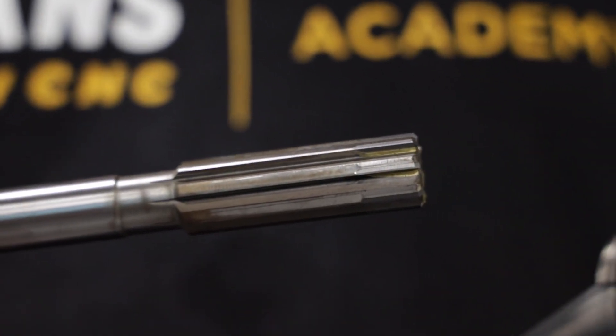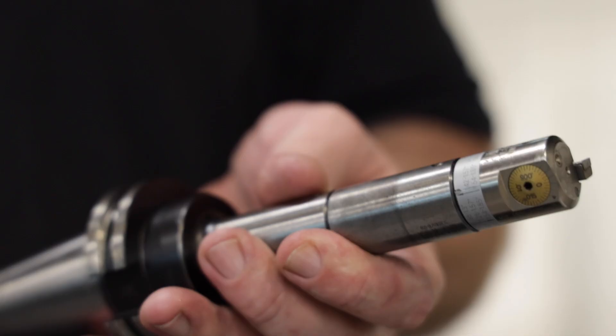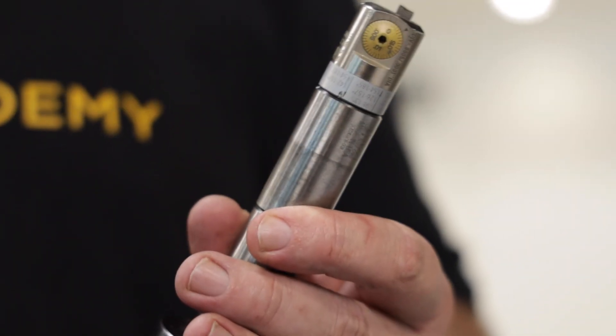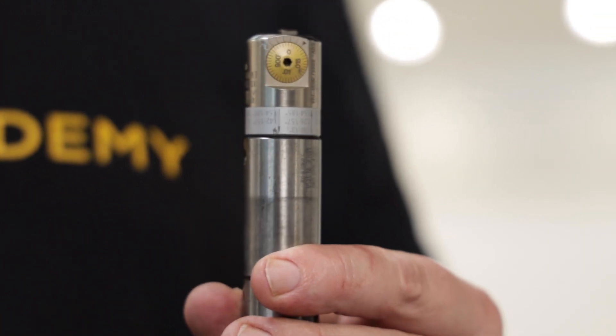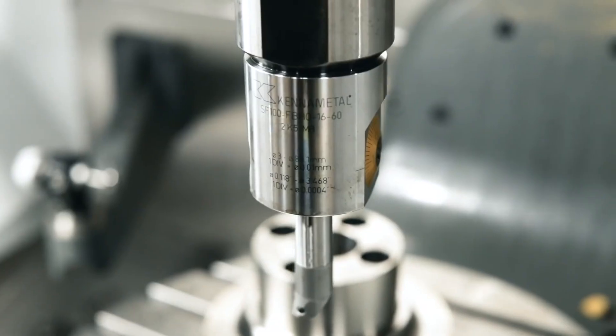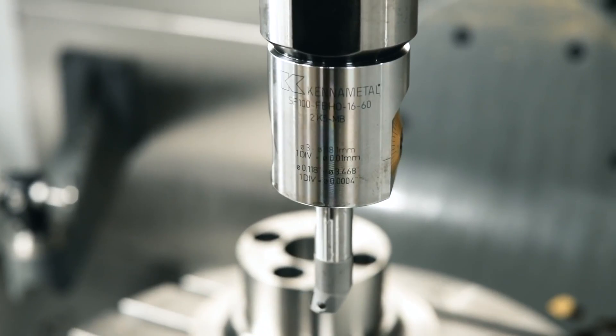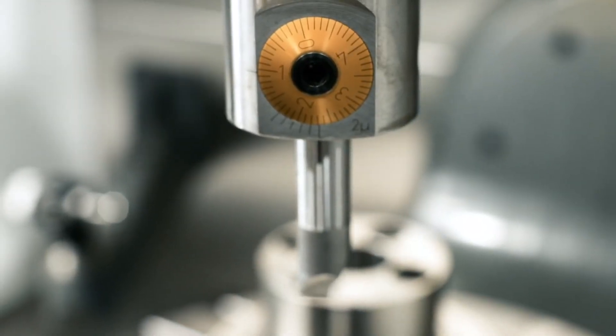Both reamers and boring heads can give you excellent hole quality and achieve extremely tight tolerances down to plus or minus a tenth. Traditionally a reamer would yield a better surface finish, but modern boring heads are usually just as good. When drilling holes that are going to need to be reamed or bored, I've always used a simple rule of thumb.